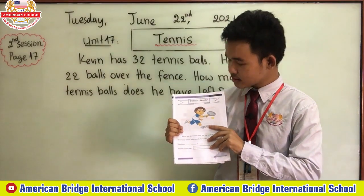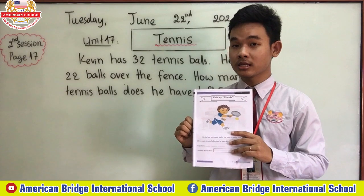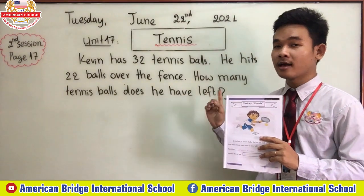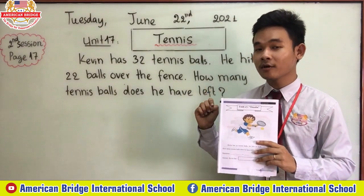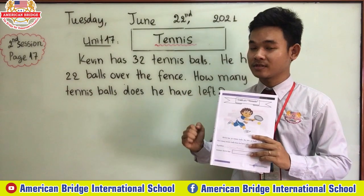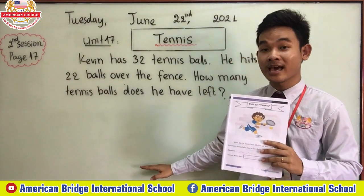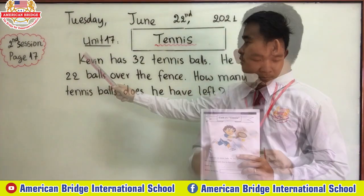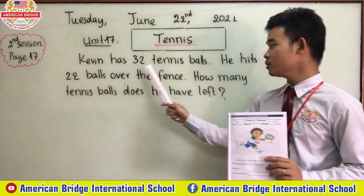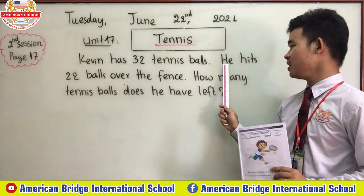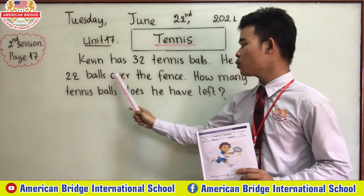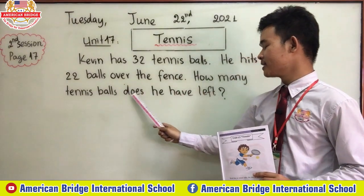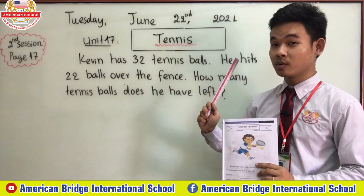Today we will do the subtraction of tennis. Teacher will read the problem for you, then explain, and then we will do the equation and answer all together. Let's read all together: 'Kevin has 32 tennis balls. He hits 22 balls over the fence. How many tennis balls does he have left?' Teacher will read one more time.